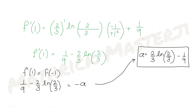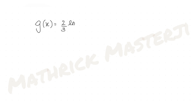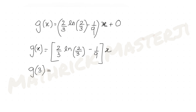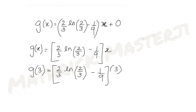Now that we have a = (2/3) ln(2/3) - 1/9 and b = 0, g(x) = [(2/3) ln(2/3) - 1/9] x. To find g(3), substitute x = 3: g(3) = [(2/3) ln(2/3) - 1/9] times 3 = 2 ln(2/3) - 1/3.